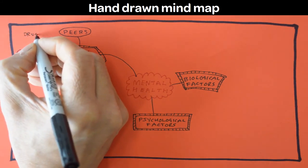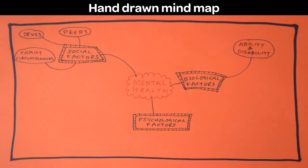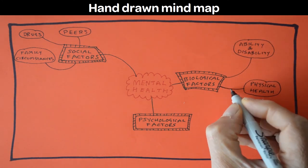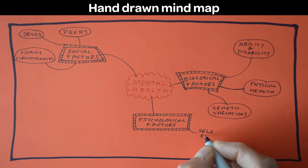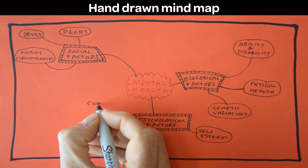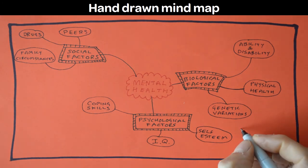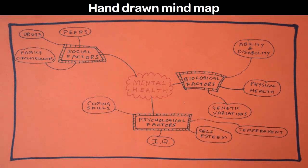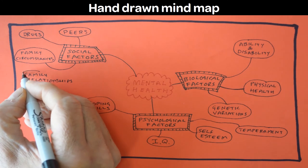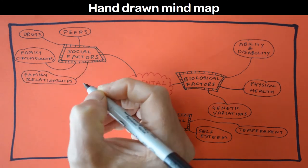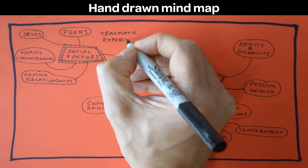Okay, let's start with social and let's put in peers. Let's put in family circumstances. Maybe we could have the effects of drugs. Let's move over to biological and put in disability. Let's also add physical health and genetic variations. Okay, let's move over to psychological and let's put in self-esteem. Next, let's add coping skills and add IQ. Finally, let's put in temperament. Other factors. Not quite sure where to put them. There's family relationships. Now, where should we put family relationships? Let's put that in social. And then there are traumatic experiences. I guess that would fit into social as well.